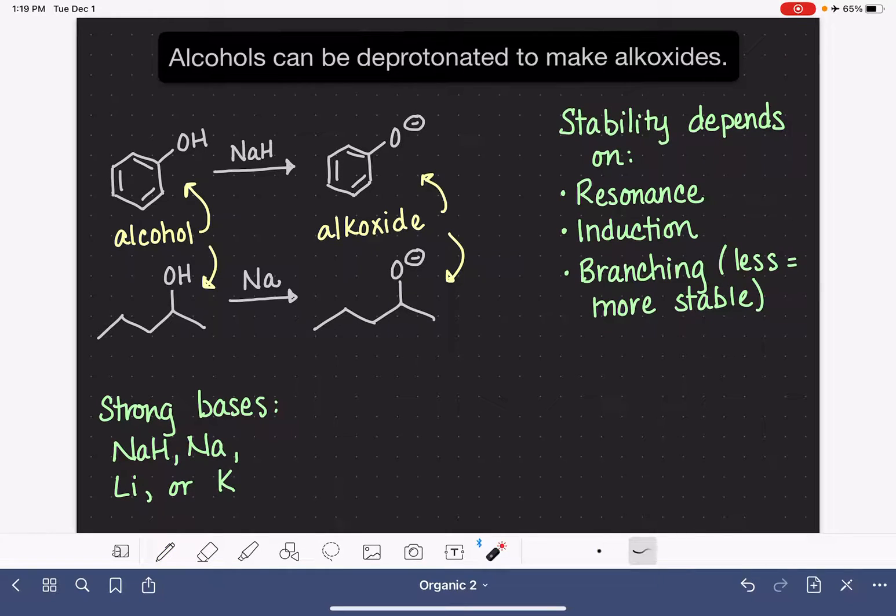So we can compare, for example, a couple of alkoxides and we could say of these two, which one is more stable? This alkoxide up top is more stable because it has resonance, whereas this guy does not.